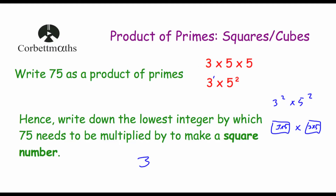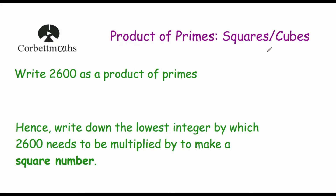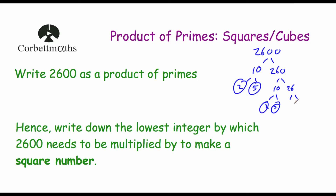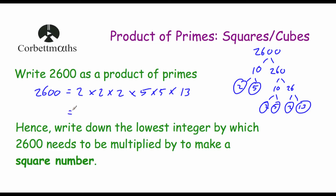The next question says: part A, write 2,600 as a product of primes. So 10 times 260 is equal to 2,600. 10 is 2 times 5, both prime. 260 is 10 times 26; 10 is 2 times 5, and 26 is 2 times 13. So 2,600 is equal to 2 times 2 times 2 times 5 times 5 times 13. In index form, that's 2 to the power of 3 times 5 squared times 13 to the power of 1.